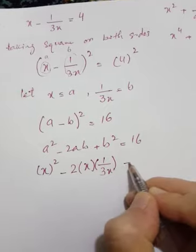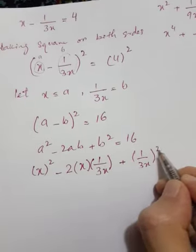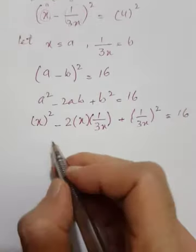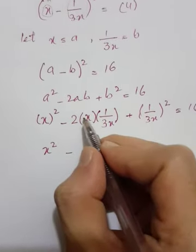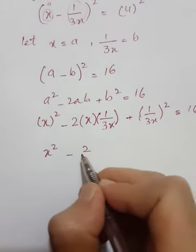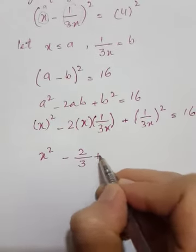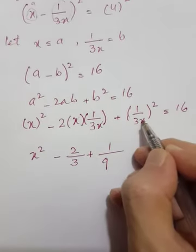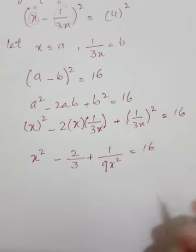Plus b which is one over three x, so one over three x whole squared equals sixteen. This gives us x squared minus the x's cancel, giving us two over three plus one squared which is one, and three squared is nine, so one over nine x squared.